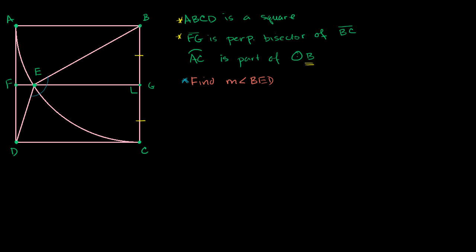A lot of trickier geometry problems revolve around drawing the right lines or visualizing the right triangles. Let me draw segment EC. Now something becomes interesting: what is the relationship between triangle EBG and triangle ECG? They both share side EG, and BG equals GC, and they both have 90-degree angles.